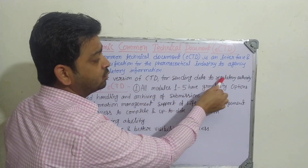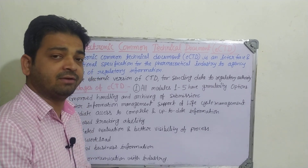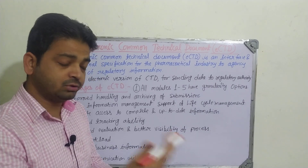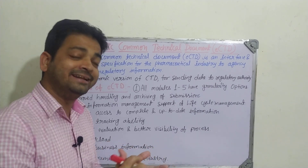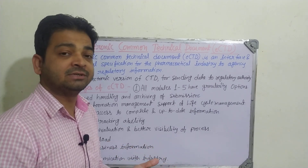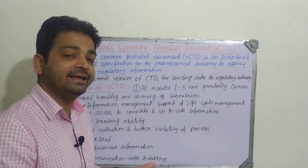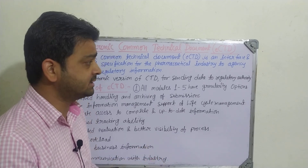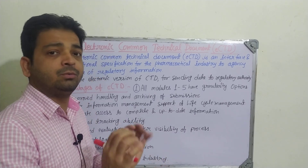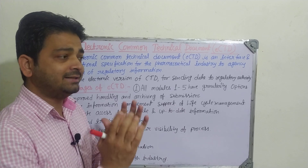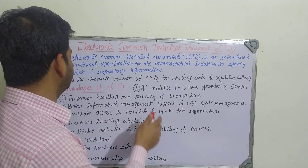Those information we are conveying electronically — that is what eCTD is. It is the electronic version of CTD for sending data to the regulatory authority, for example to the FDA when we are applying for IND — Investigational New Drug Application — or NDA — New Drug Application. Whatever information we are filing online, that is called the eCTD.